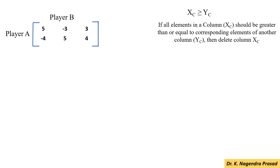Next, check the 1st column elements with the 2nd and 3rd columns. First, check the 1st column elements with the 2nd column. Here, 5 is greater than minus 3, but minus 4 is not greater than 5. So, the condition is not satisfied.